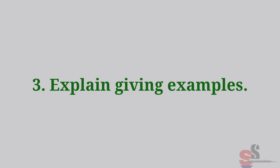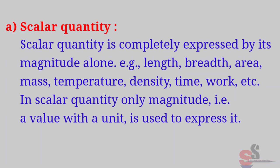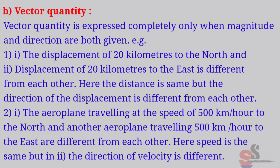Explain giving examples. Scalar quantity. Scalar quantity is completely expressed by its magnitude alone. For example, length, breadth, area, mass, temperature, density, time, work, etc. In scalar quantity, only magnitude, that means a value with a unit is used to express it.